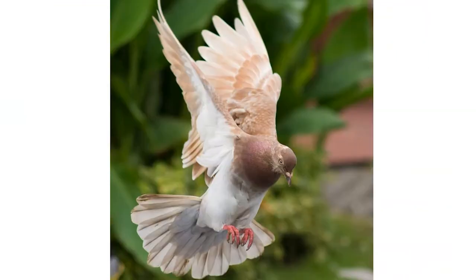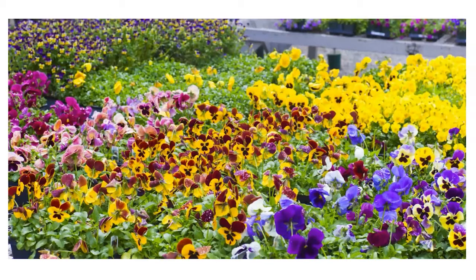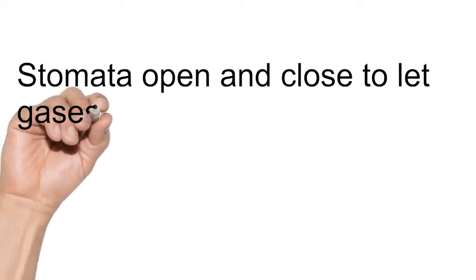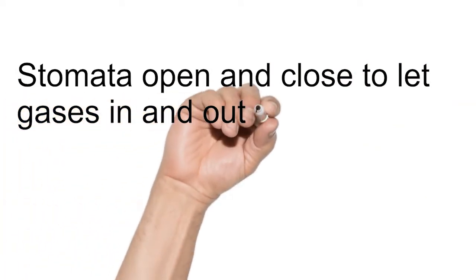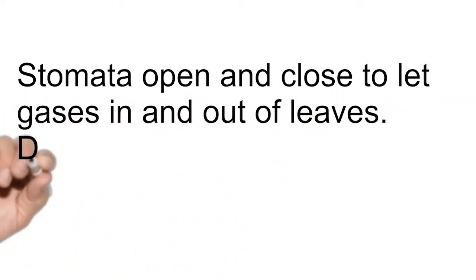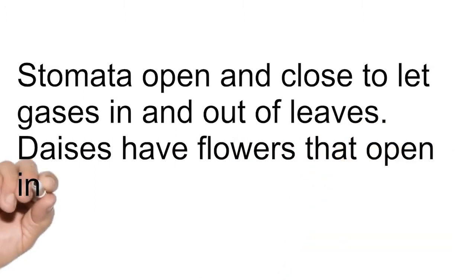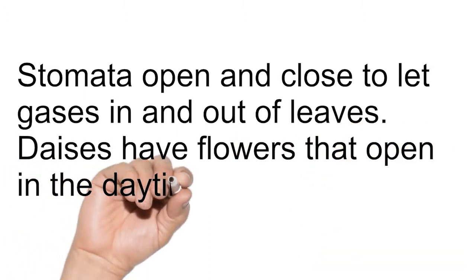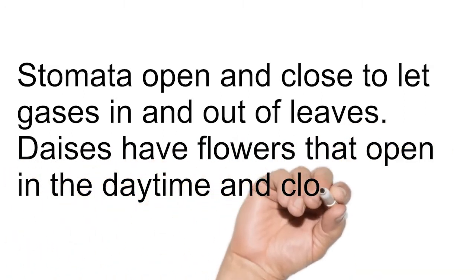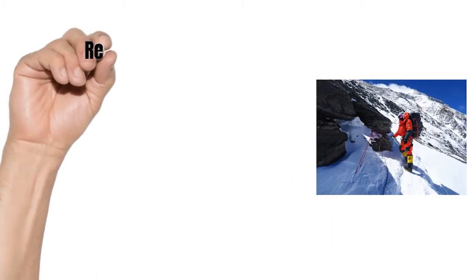Movement: animals can walk, run, hop, crawl, swim, or fly from place to place. Plants are fixed in one place, but some parts do move — stomata open and close to let gases in and out, and daisies have flowers that open in the daytime and close at night.